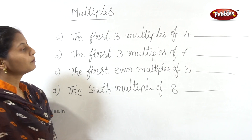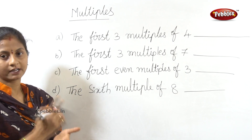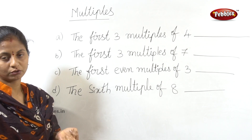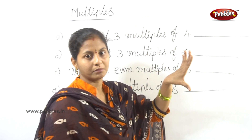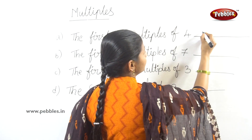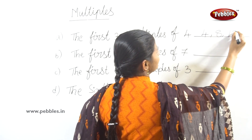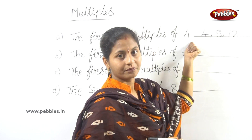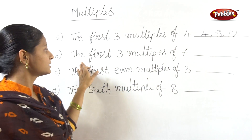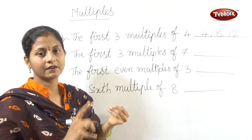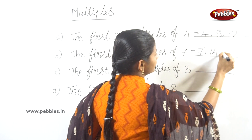First question: the first 3 multiples of 4. Starting from 1: 1 times 4 is 4, 2 times 4 is 8, 3 times 4 is 12. These are the first 3 multiples of 4. Next, the first 3 multiples of 7: 7 ones are 7, 7 twos are 14, 7 threes are 21.